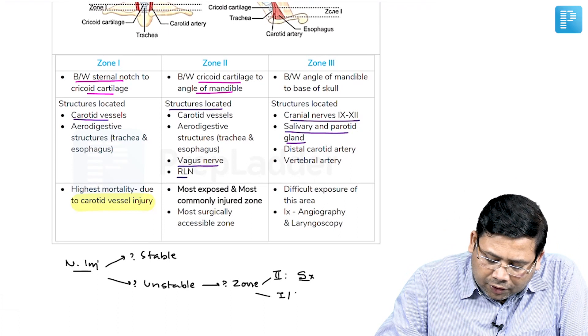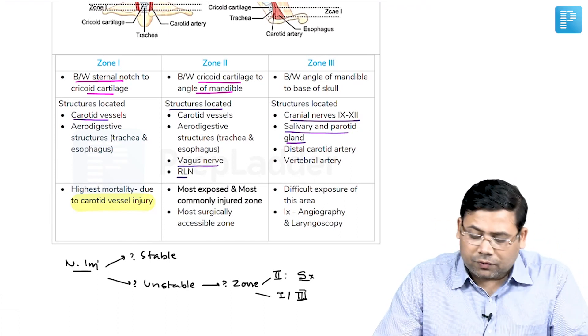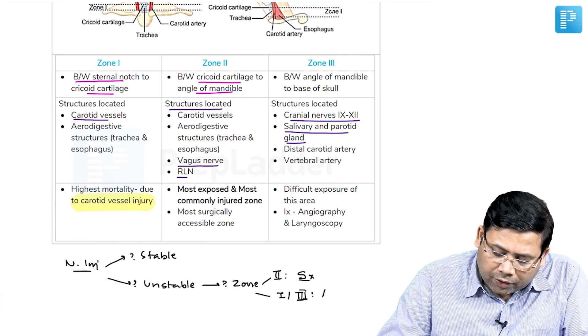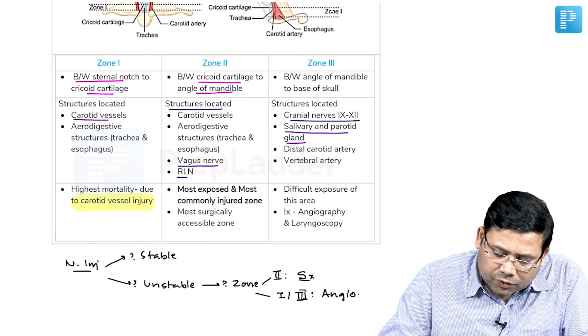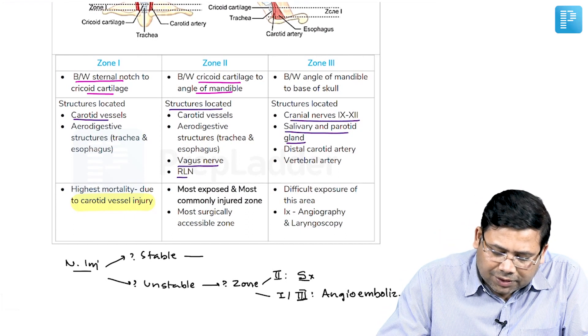If it is zone 1 and 3, you have to go for cumbersome procedure of sternotomy for 1, mandibulotomy for 3. So for them, you will go for angioembolization.